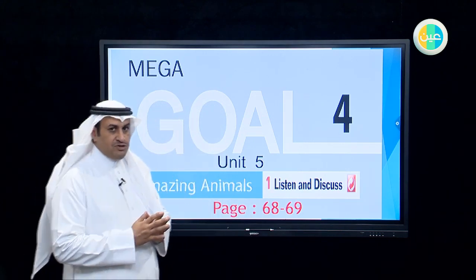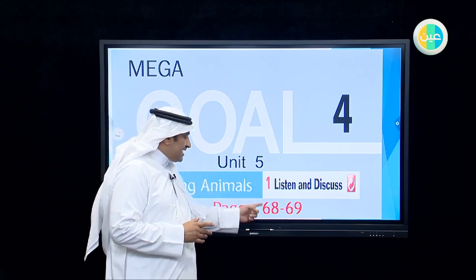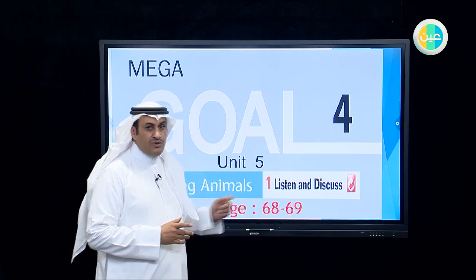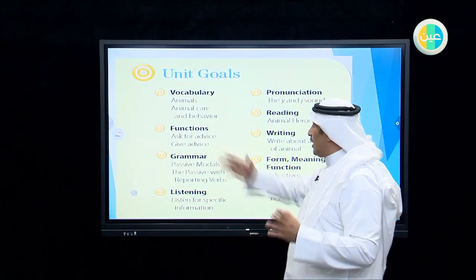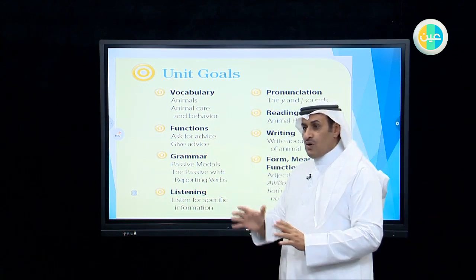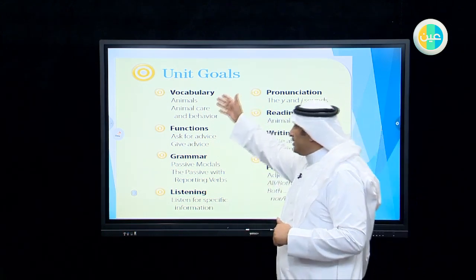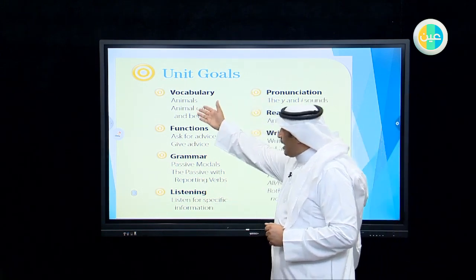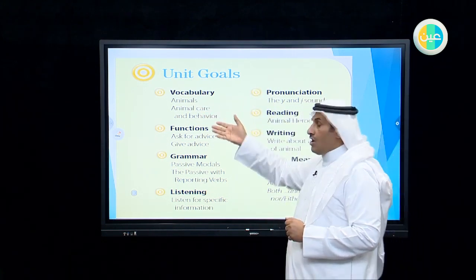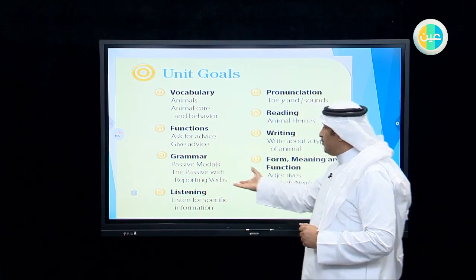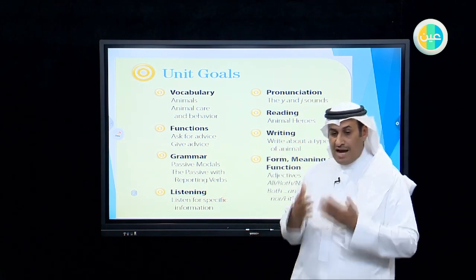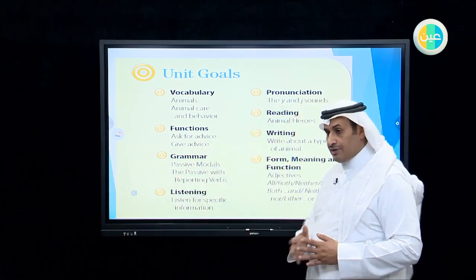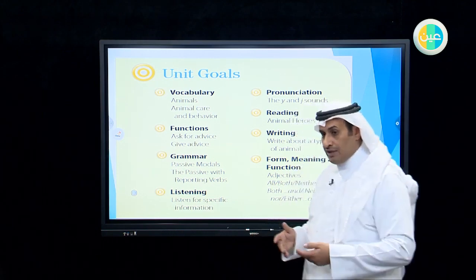I want all of you to open your books on pages 68 and 69 and follow along as I explain this unit. In this unit we have many goals. We need to cover vocabulary like animals and animal care behavior, functions — asking for and giving advice — grammar with passive modals and passive with reporting verbs, and listening activities. All of these sections we have to talk about, insha'Allah, in this lesson and in lessons to come.